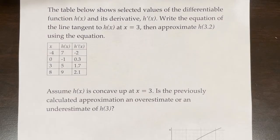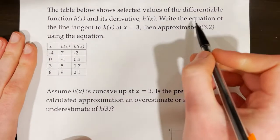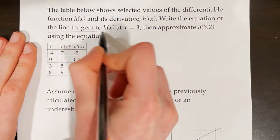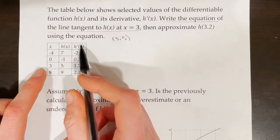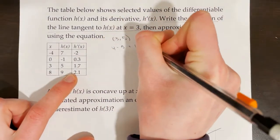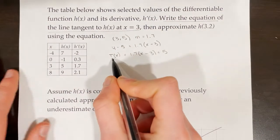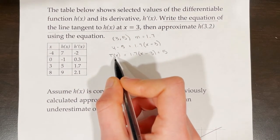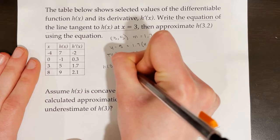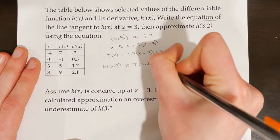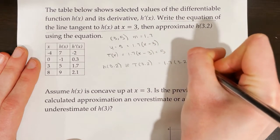The table below shows selected values of the differentiable function h of x and its derivative h prime of x. Write the equation of the line tangent to h of x at x equals 3, then approximate h of 3.2 using that equation. To write the tangent line, we need a point and a slope. The point we can get is (3, 5), and the slope — the derivative at 3 — is 1.7. Using t of x, and approximating h of 3.2, h of 3.2 is approximately t of 3.2, which is 1.7 times (3.2 minus 3) plus 5.